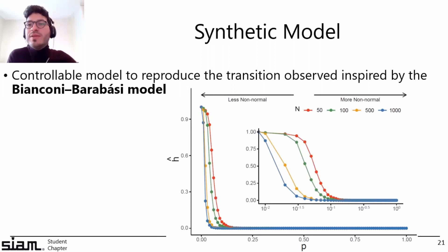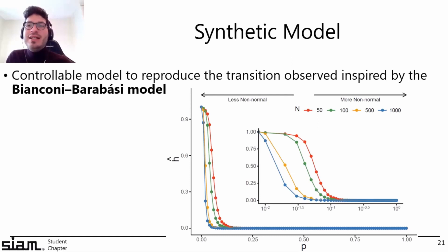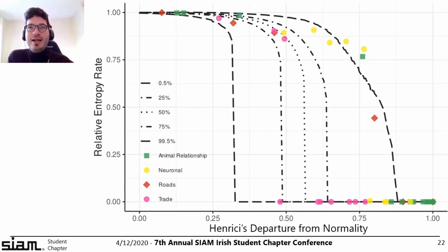When p equals zero we get a symmetric (normal) matrix; when p equals one we get the DAG with no reciprocated edges. Running this model many times — each color representing a different network size, x-axis showing parameter p, y-axis showing relative entropy rate — we see the collapse happens very quickly. Each point has 10,000 realizations. Overlaying the empirical transition observed in four domains with synthetic model results, we find that a range of values of p is needed to account for the full transition region.